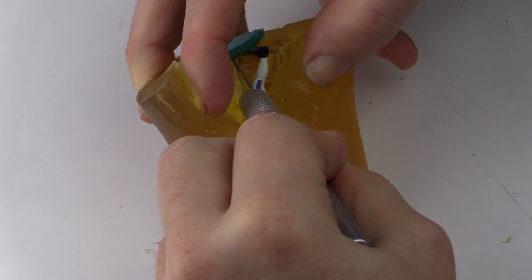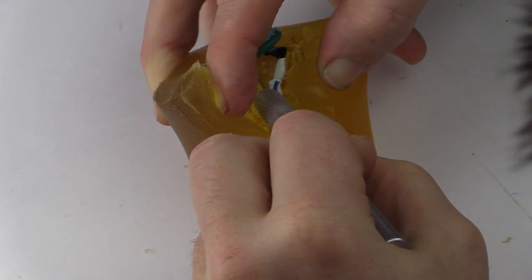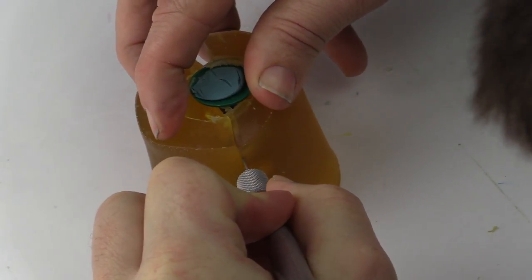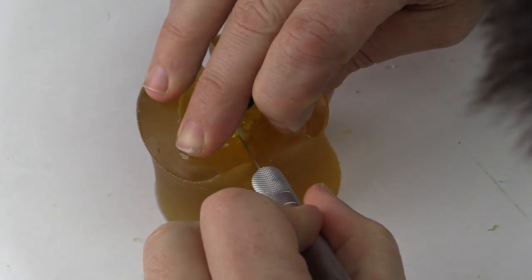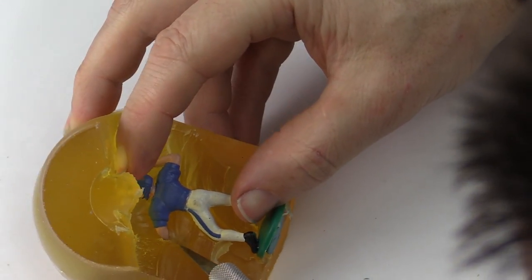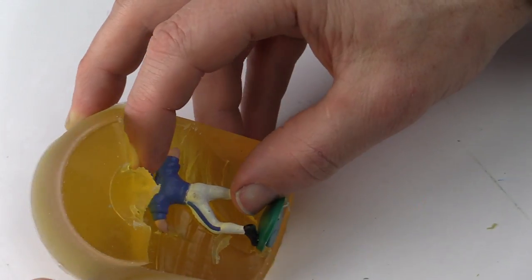We also need to cut between the legs to get the figure out. With this figure, you can see the parting lines from the original figure so it is only a matter of following the same lines. We cut along the hand so we are able to pull it out without causing damage.